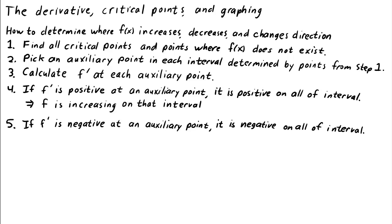Step 5: If f prime is negative at an auxiliary point, it is negative everywhere on the corresponding interval. We can conclude that f is decreasing on that interval. Using this procedure, we can determine where a function f of x is increasing, where it is decreasing, and where it changes direction. The result is that we have fundamental information on the behavior of the function. We can use this information, for example, to sketch the graph of a function.